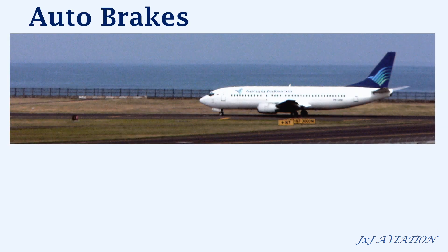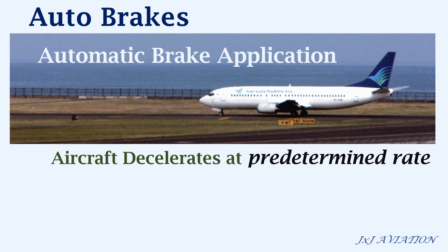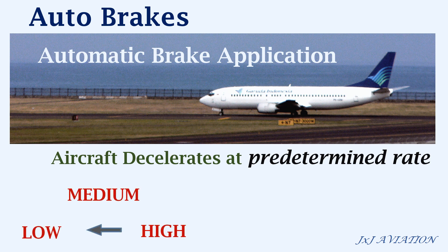Now we will look at the auto brakes. On an aircraft, the auto brakes are used for automatic brake application. When the auto brake system is activated, the aircraft decelerates at a predetermined rate. Usually there are different modes in which the system can be activated. Depending on the mode, the deceleration rate varies, which is helpful during takeoff in case of a rejected takeoff or during landing.